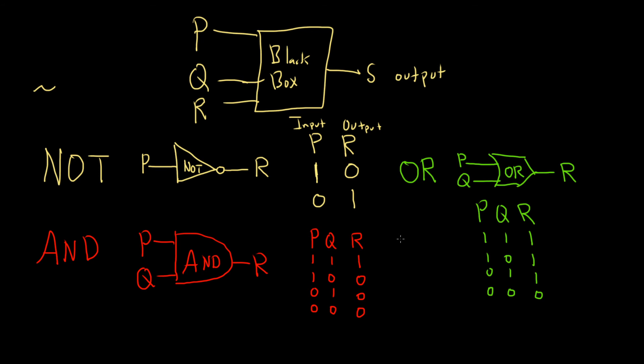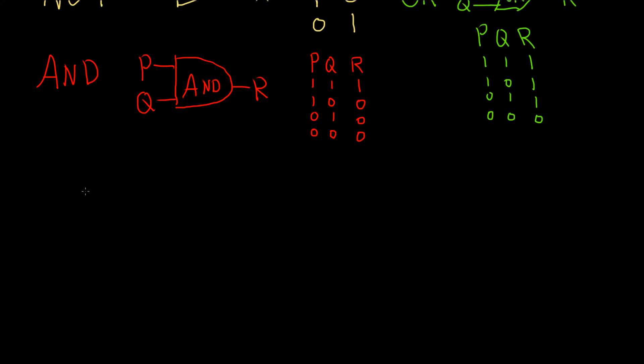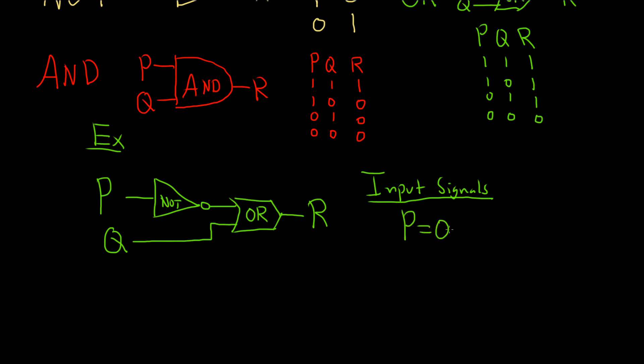Let's do a simple example of some stuff with circuits and logic. Say we have P and it goes into a NOT gate. And then say we have that goes into an OR gate. And then say we have Q also going into this OR gate. And then this would be R here. And let's figure out what the output is. Say we have the following input signals: P equals zero and Q equals one. Let's find out what the output is.